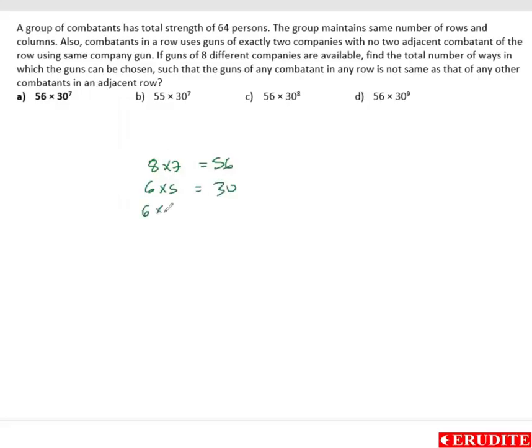Interestingly third row, again it will be 6 into 5 because the guns used in here cannot be used here, but this guns can come back here. So it will be always 30.